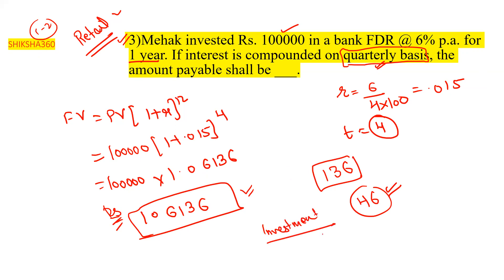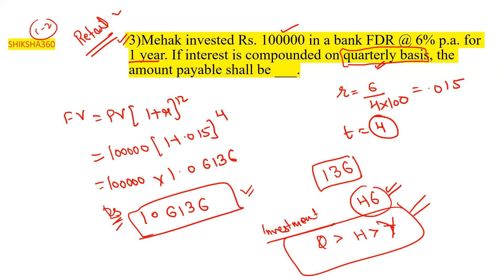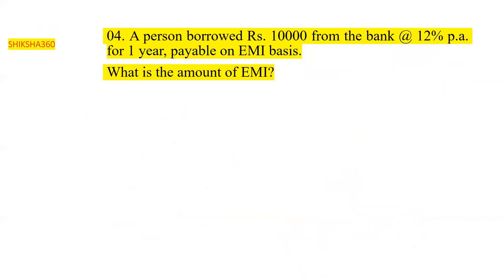So the sequence is: quarterly compounding gives more interest than half-yearly, and half-yearly gives more interest than yearly. The exam will ask these types of questions, so you must understand the concept behind this. These are straightforward one-mark numericals that have already been asked in examinations — you just need to know which formula to apply.